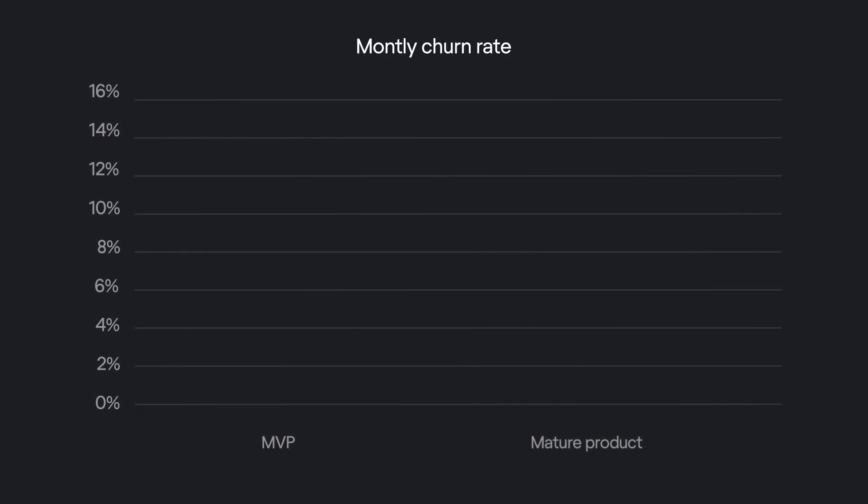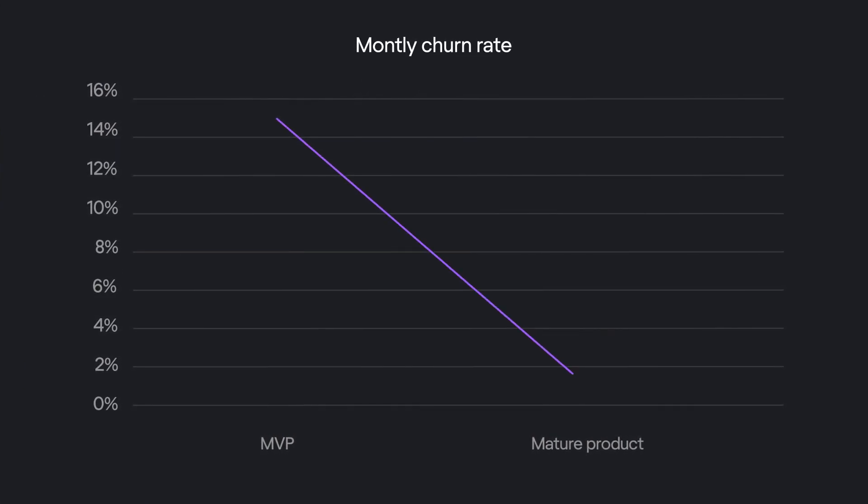Eventually, your progress should look like this graph — the more mature you become, the lower the churn rate. But what if the number you get is not where you'd like it to be? To a certain extent, churn is inevitable — you cannot satisfy everyone. However, to secure the company's profitability and revenue growth, your goal is to minimize the churn rate, pursuing the target of 3–5% annually. Here are a few tips to help you improve your churn rate.